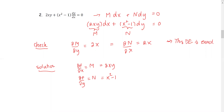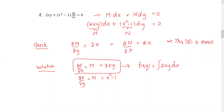For the first step, we're going to pick either M or N and find the antiderivative. We're going to start with M. Therefore, the solution f(x,y) is the integral of 2xy with respect to x, because M is the partial derivative of the solution with respect to x. So f(x,y) is the integral of 2xy dx plus a constant function in terms of y, giving us x squared times y plus g(y).